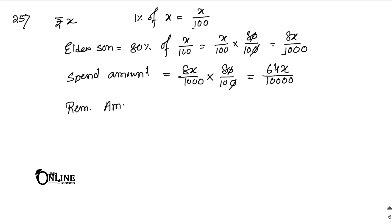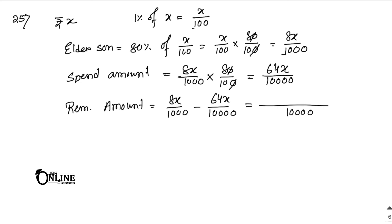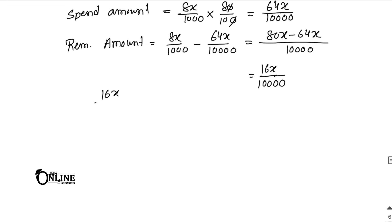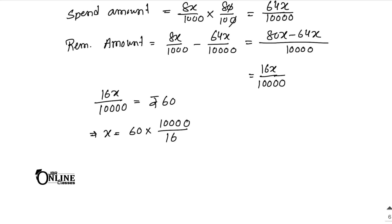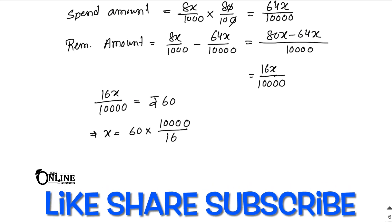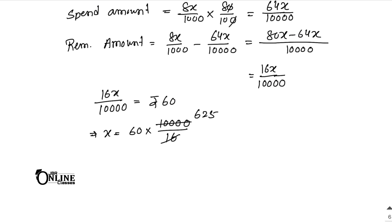The remaining amount equals 8x by 1000 minus 64x by 10000. The LCM is 10000, so this equals (80x minus 64x) by 10000, which is 16x by 10000. According to the problem, 16x by 10000 equals 60. So x equals 60 into 10000 by 16, which simplifies to 37,500. Therefore Imran's monthly income is rupees 37,500.